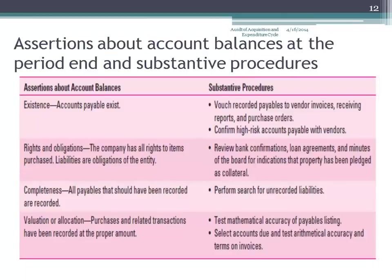Valuation and allocation is basically testing the mathematical accuracy. Unlike accounts receivable where we have estimates, accounts payable is not an estimate. You're not going to estimate your accounts payable; there's no guesswork with accounts payable. Are there liability accounts where there's guesswork? Can you think of any liability accounts where an estimate has to be made? Warranties — exactly. Warranties is one.